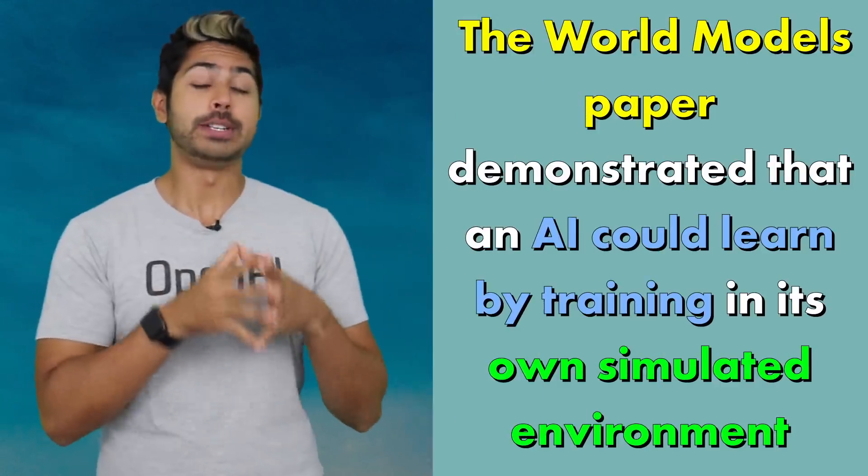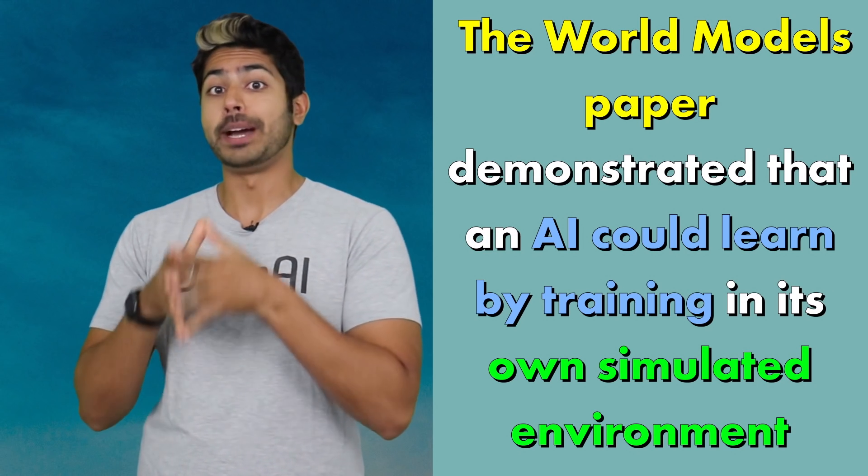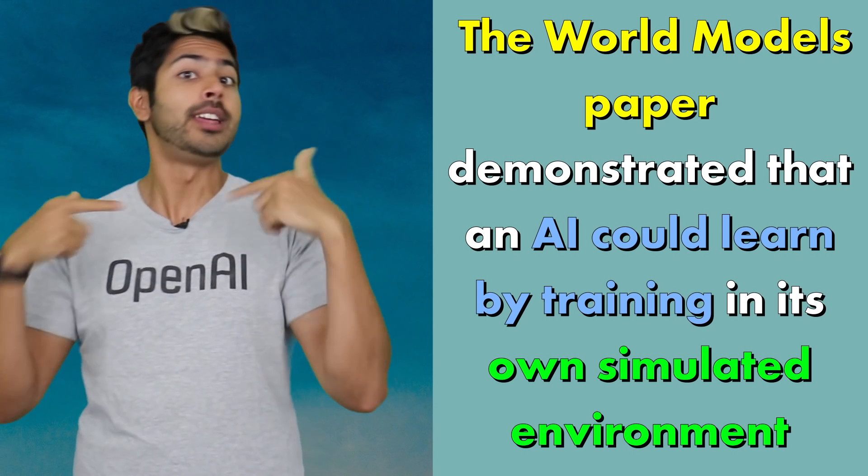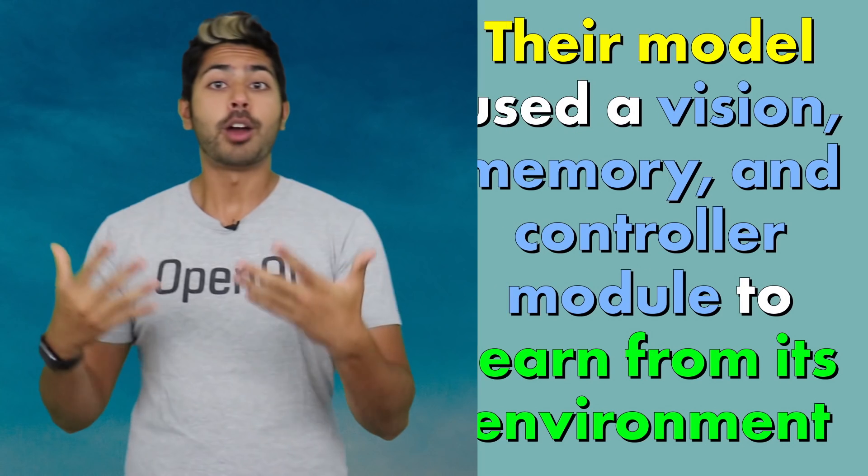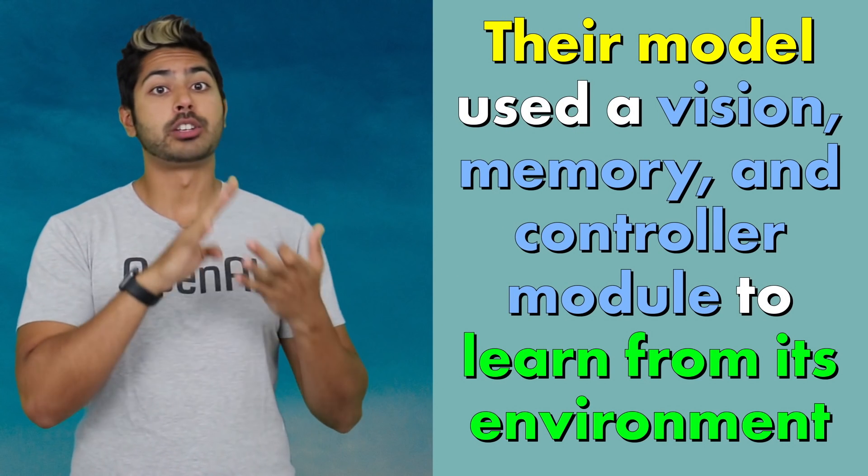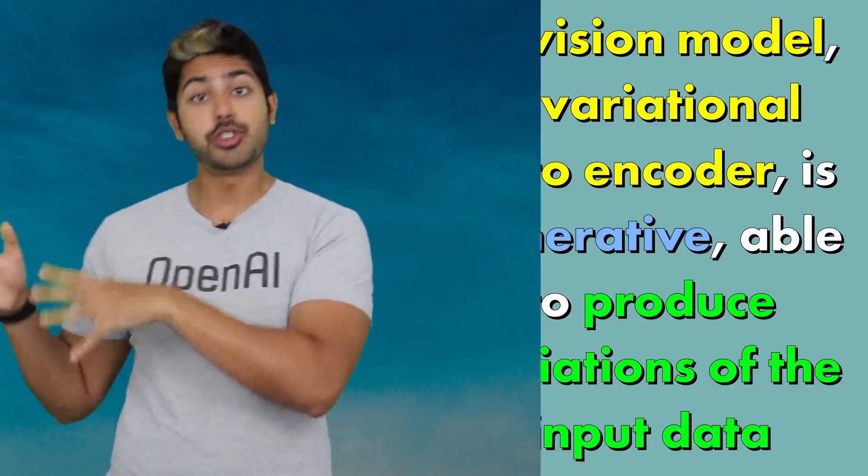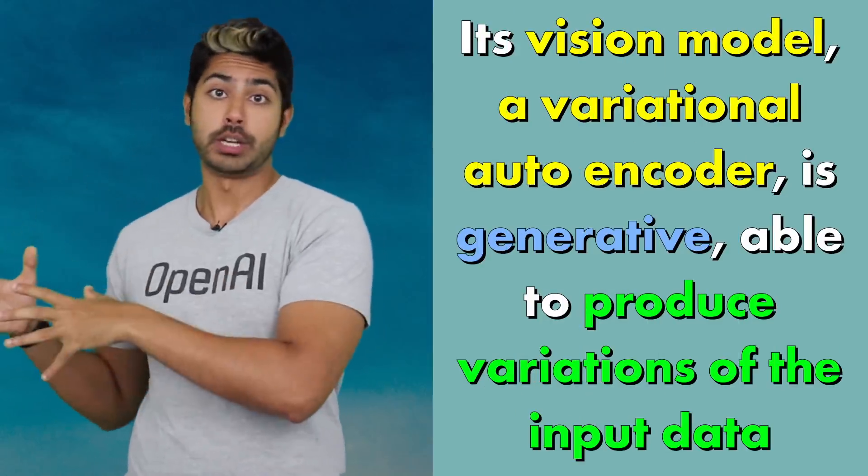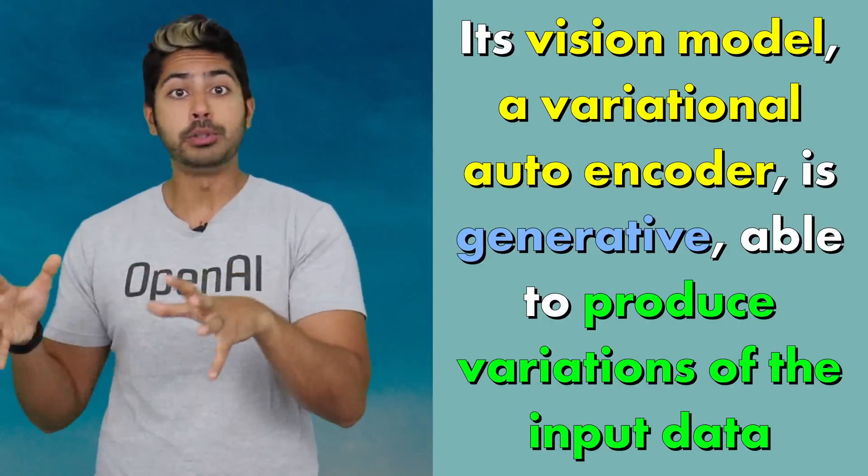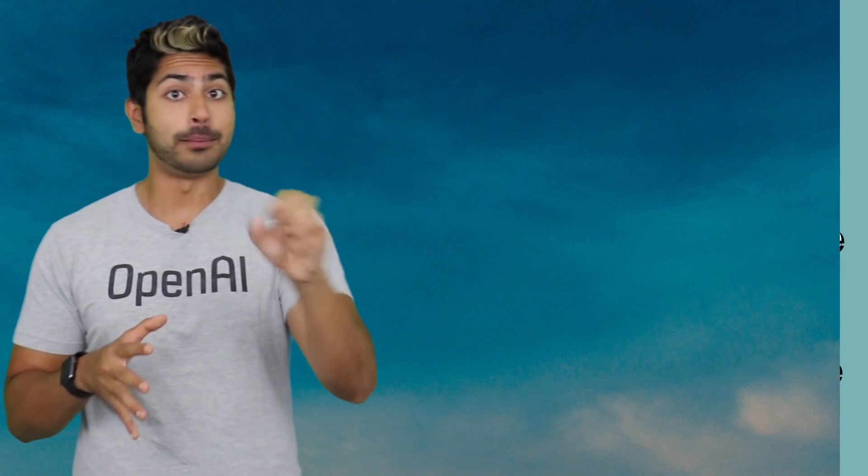Three points to remember from this video. The world models paper demonstrated that an AI could learn by training in its own simulated environment. Their model used a vision, memory, and controller module to learn from its environment. And its vision model, a variational autoencoder, is generative, able to produce variations of the input data.